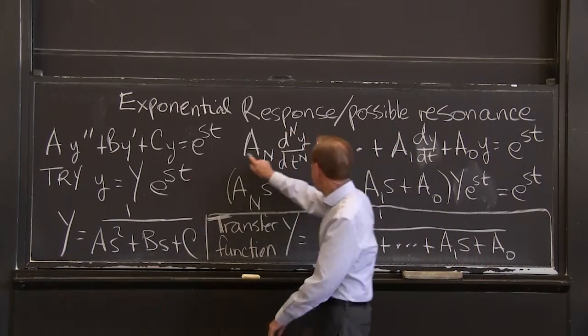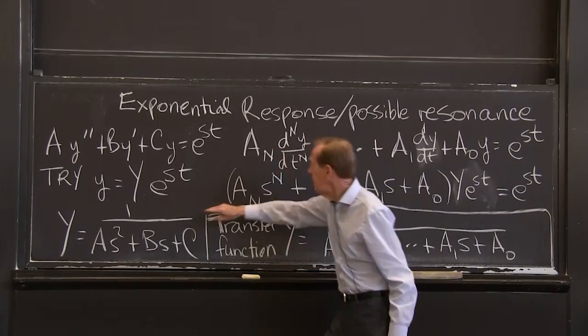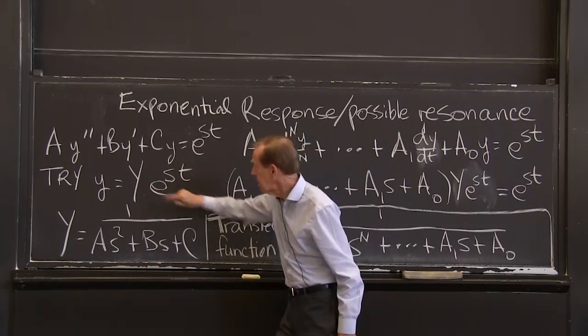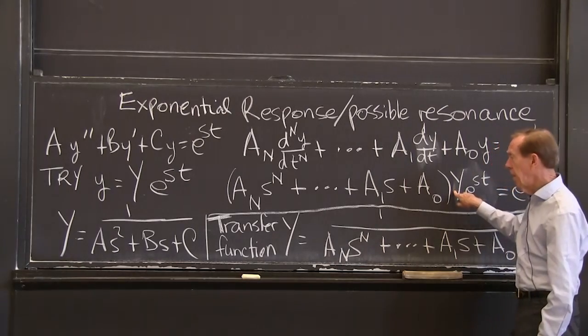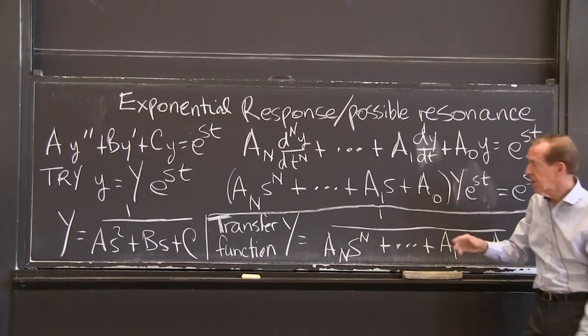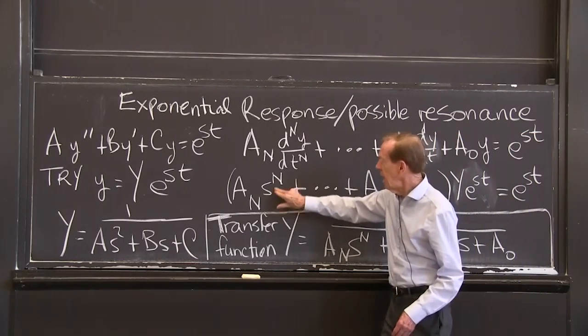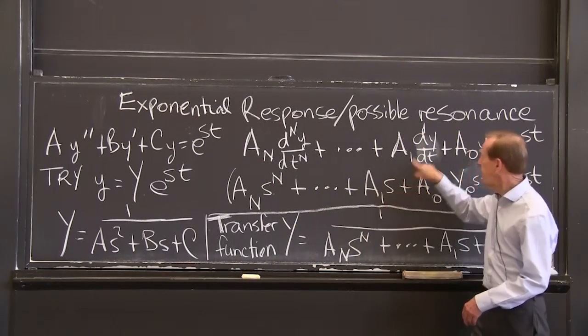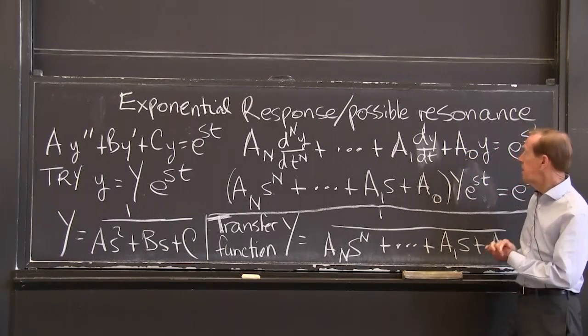Can I just do that? I'll do it for the nth degree. Why not? So when I plug this in for y, every derivative brings an s. So the capital Y is still there. The exponential is going to be still there. And then there are all the s's that come down from the derivatives.